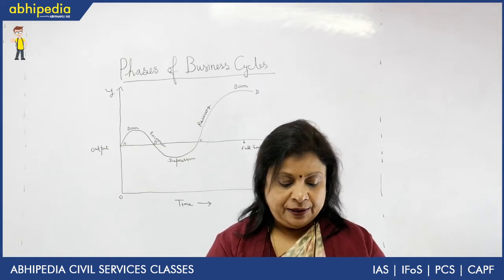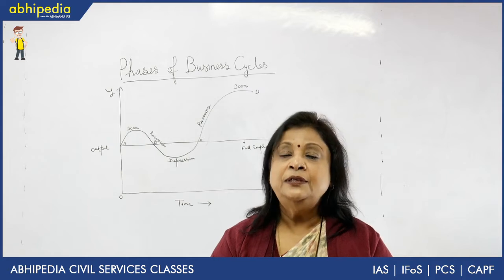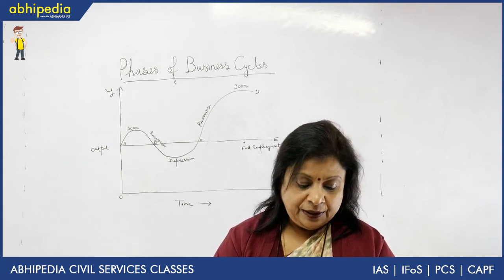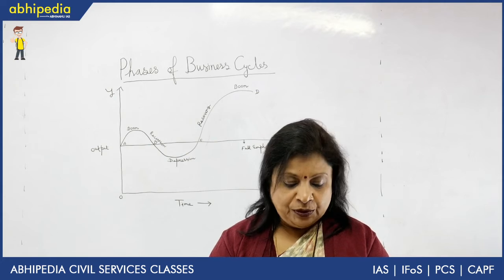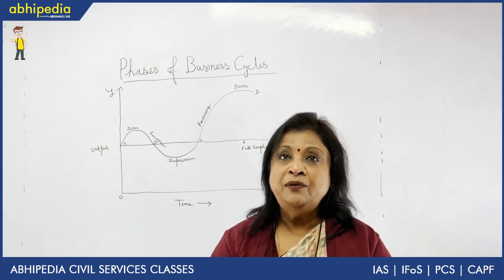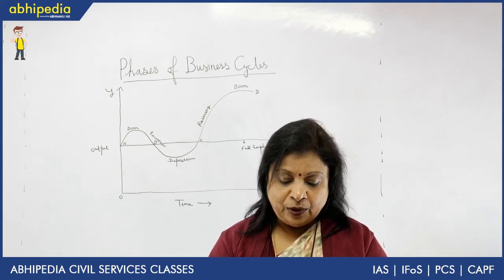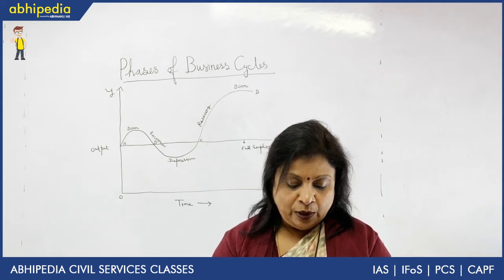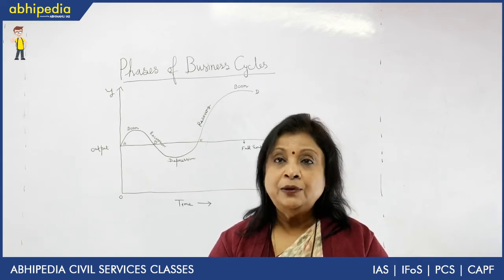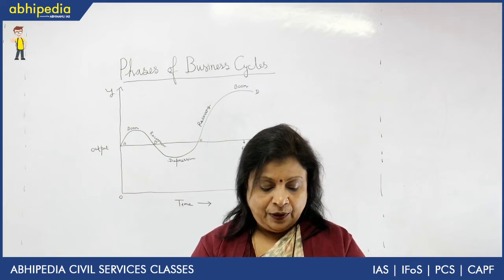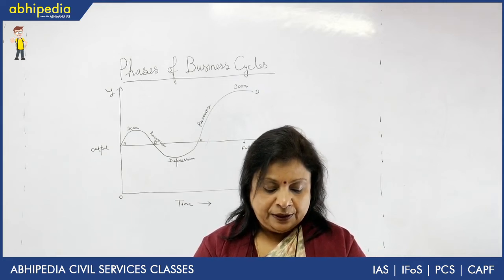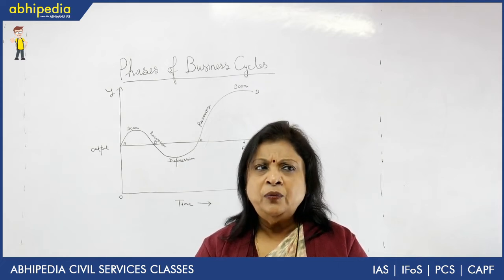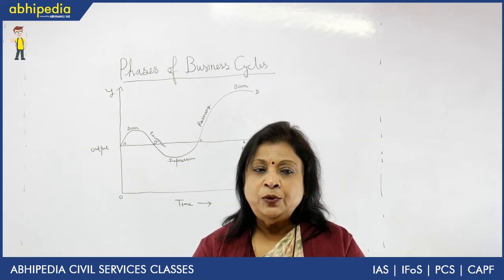The features of recovery: replacement investment results in an increase in income and investment. There is also an increase in output. Employment increases. Demand for consumption goods and production goods starts increasing. Prices begin to look up. There are more profits, cost increases, and investment increases. Demand for bank loans and advances increases. Pessimism gives way to optimism.